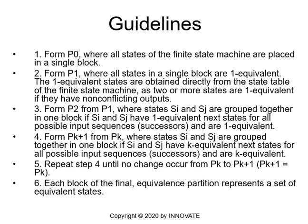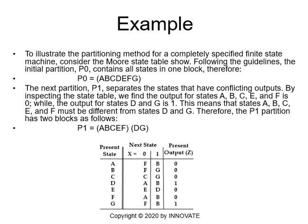To illustrate the partitioning method for a completely specified finite state machine, we will consider the state table shown, with states A, B, C, D, E, F, and G — seven states in total — with next state and output columns. P0 contains all states in one block: {A, B, C, D, E, F, G}. For P1, we separate states that have conflicting outputs. The output for states A, B, C, E, and F is 0, while the output for states D and G is 1. So P1 = {A, B, C, E, F} and {D, G}.